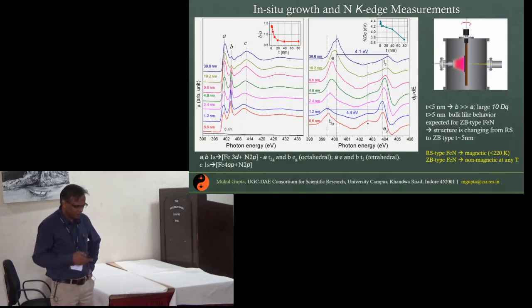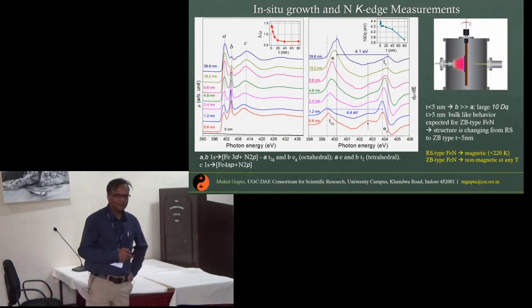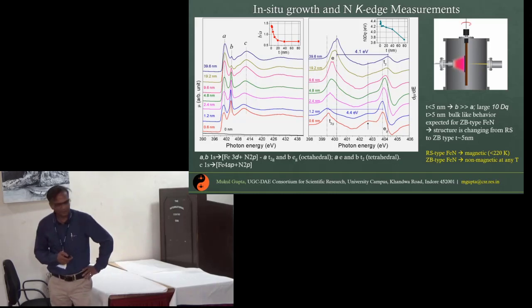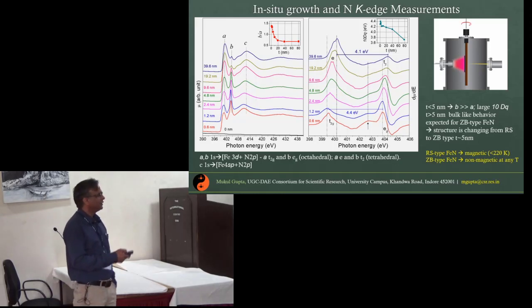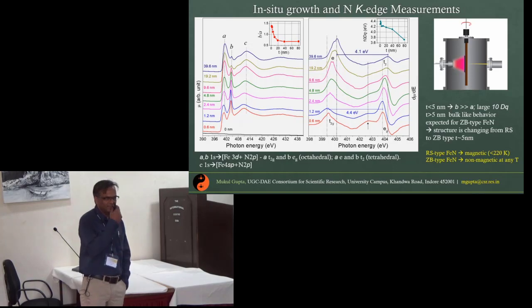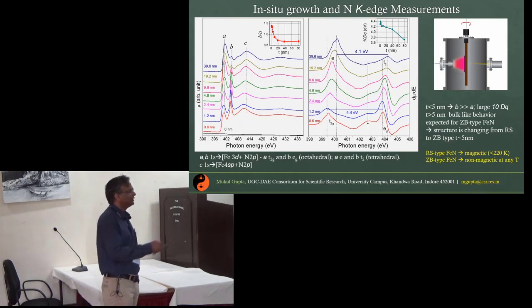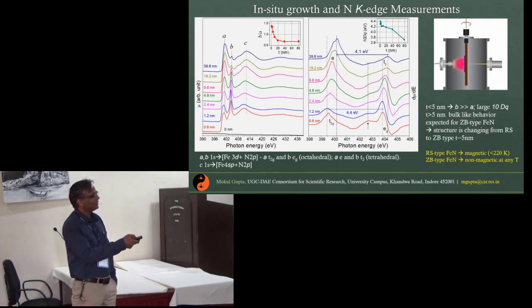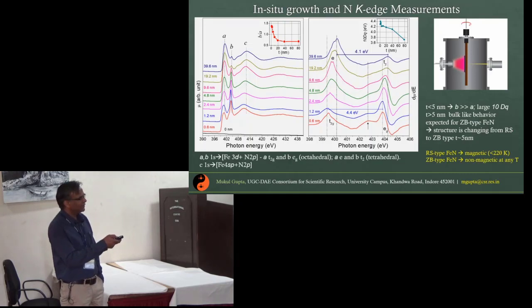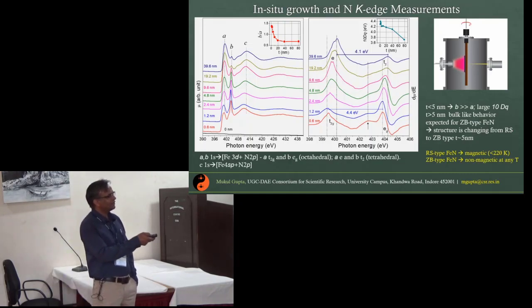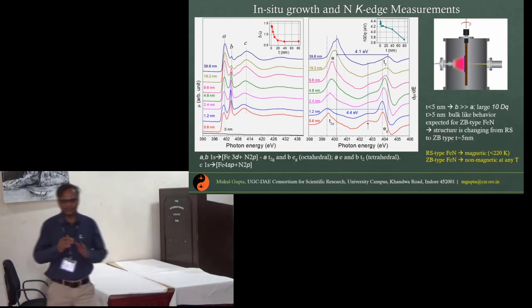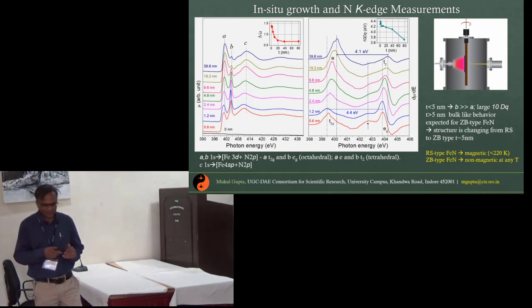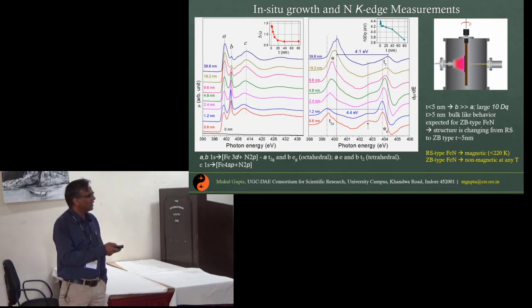This is how the nitrogen K-edge would look like as a function of thickness. You can see there are two distinguished changes. One is that the feature B and A, their ratio actually goes down as you increase the thickness. Similarly, the energy separation between these two features also comes down. This is a signature of a structural transition that is taking place around 5 nanometer.